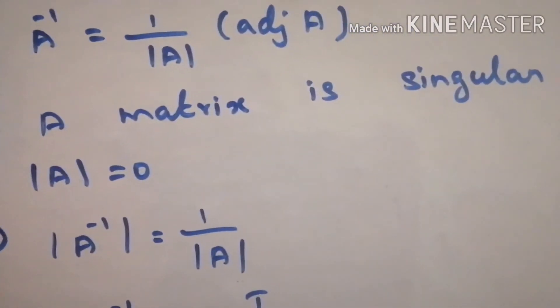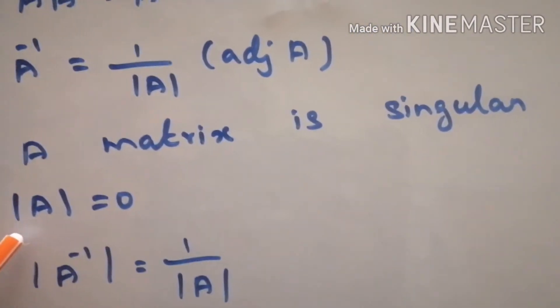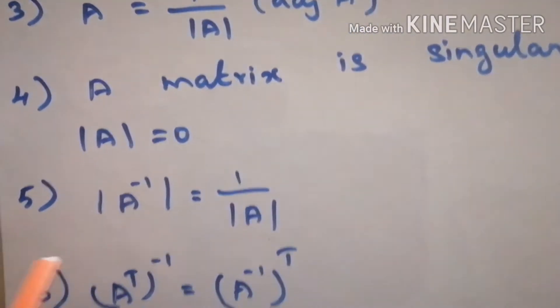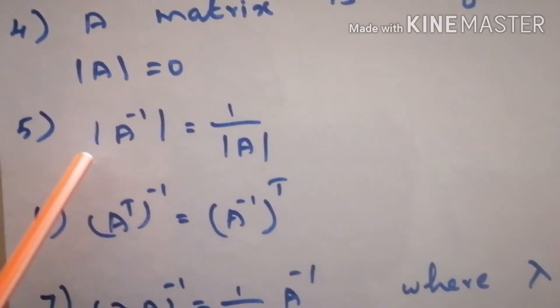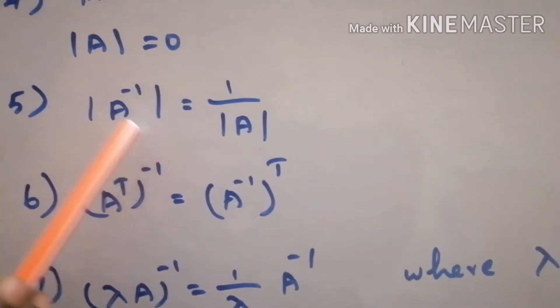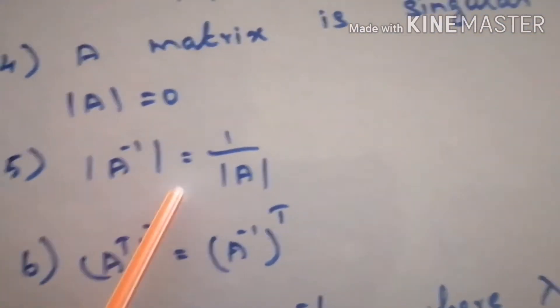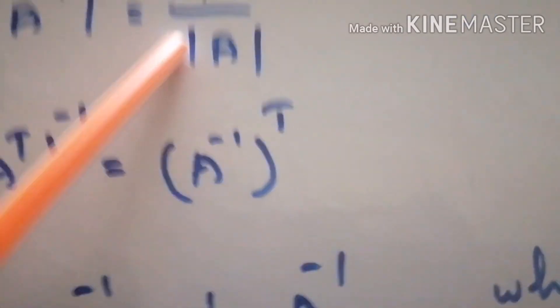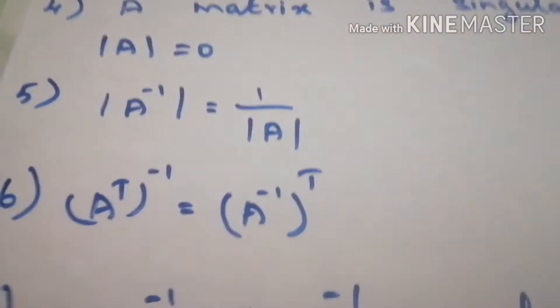A matrix is singular if determinant of A is equal to 0. Determinant of A inverse is equal to 1 by determinant of A.